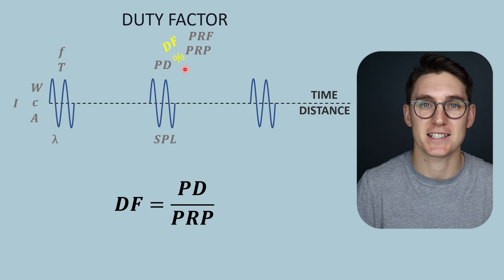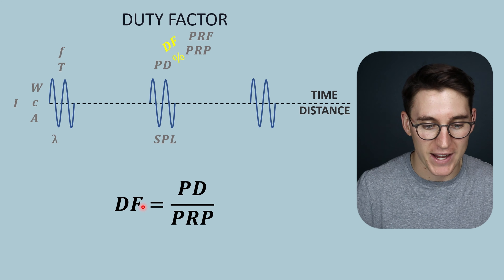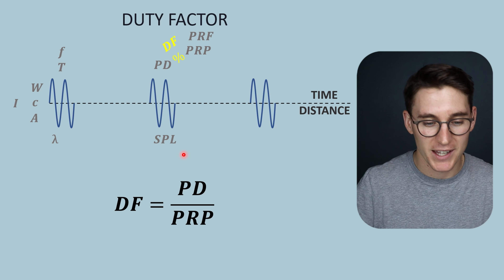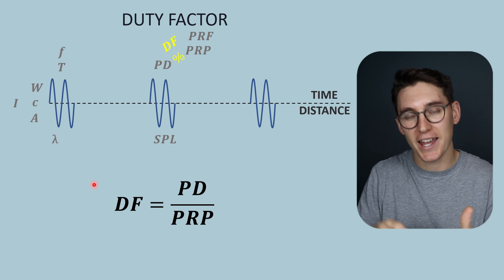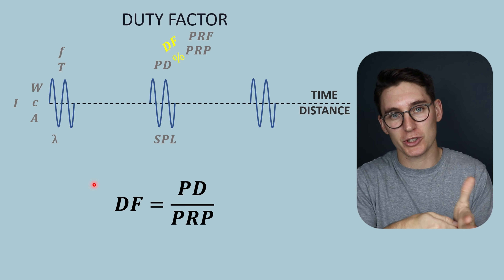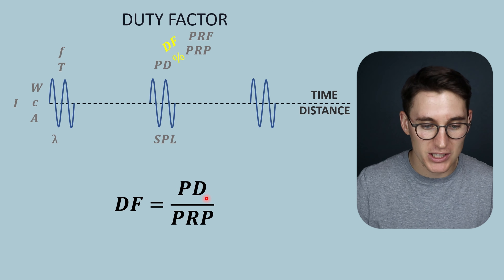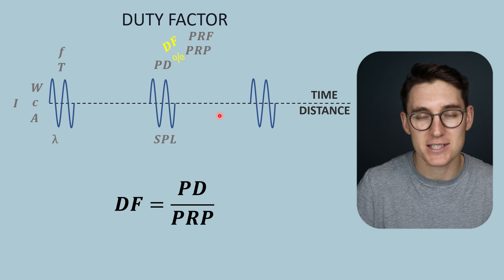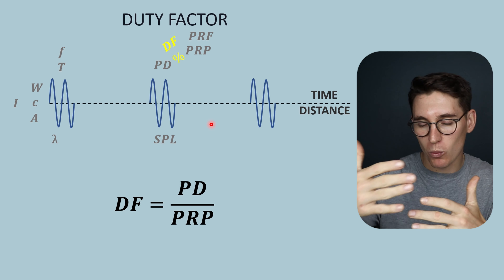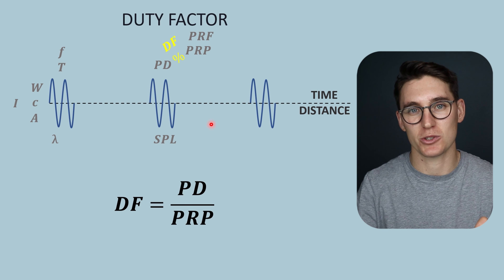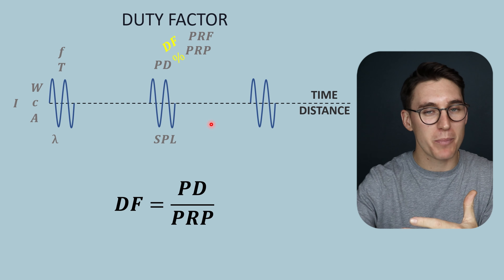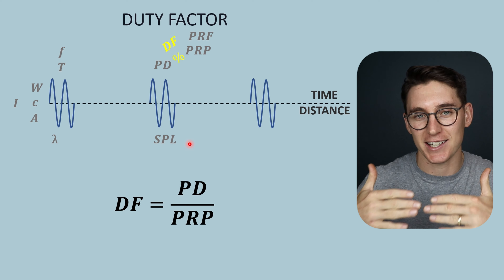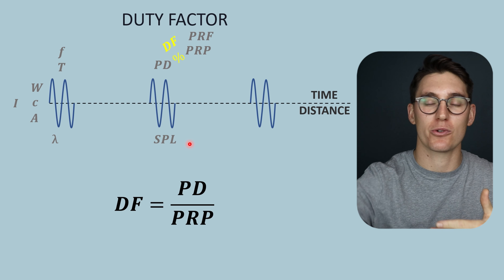The last parameter is what is known as the duty factor. The duty factor determines the percentage of time that the ultrasound machine is transmitting a pulse compared to the entire time that we are taking an image — it determines the intensity that our patient will be receiving in a given examination. If we were scanning a patient for one minute, the duty factor tells us how long we are actually creating ultrasound waves versus listening for echoes. In that listening period we are not imparting any intensity onto our patient — there's no power being transmitted into the tissue.